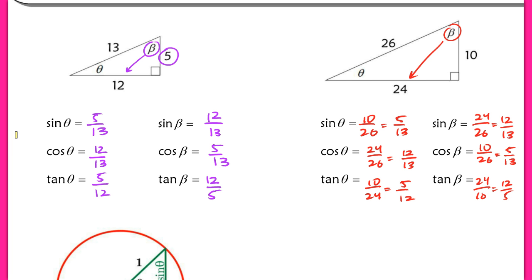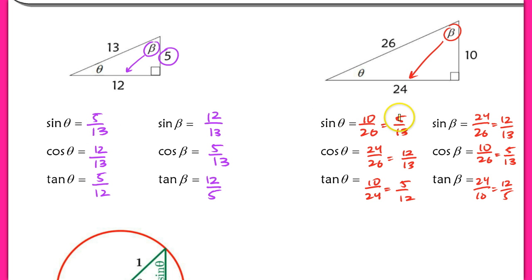The reason we're looking at these two triangles simultaneously is to get a very important concept across. Our trig functions are defined to be ratios of the side lengths of a triangle. So whether we have a 5-12-13 triangle that has been enlarged so that it's double the side length, the ratios still remain the same. Our sine of theta matches with the sine of theta in the larger triangle — these ratios must be the same. That's a really important concept because it extends our definitions for our unit circle beyond just our unit circle.